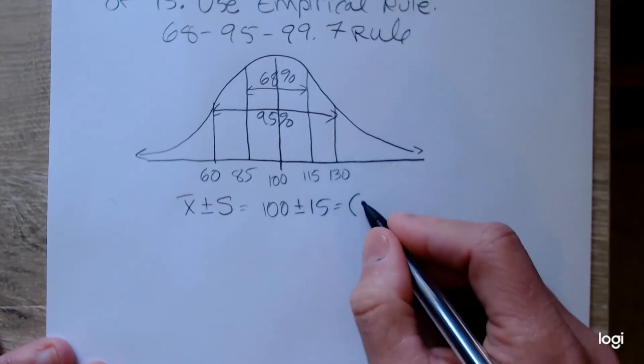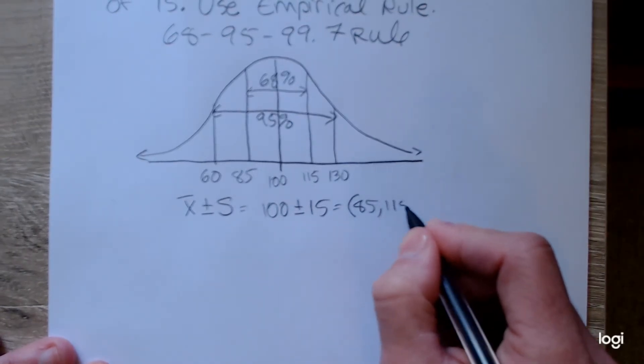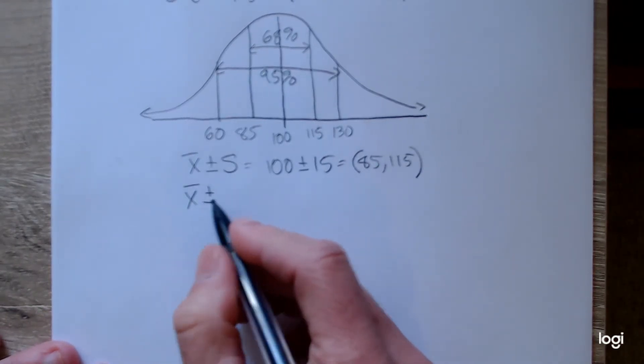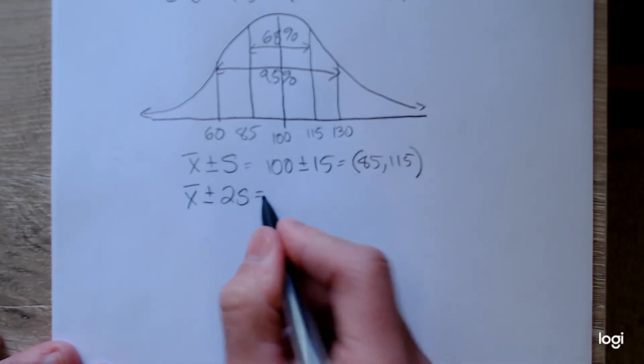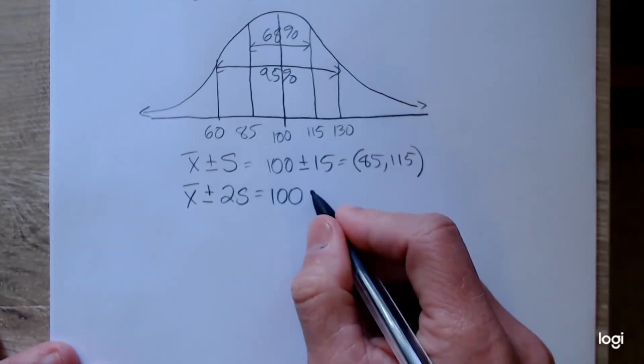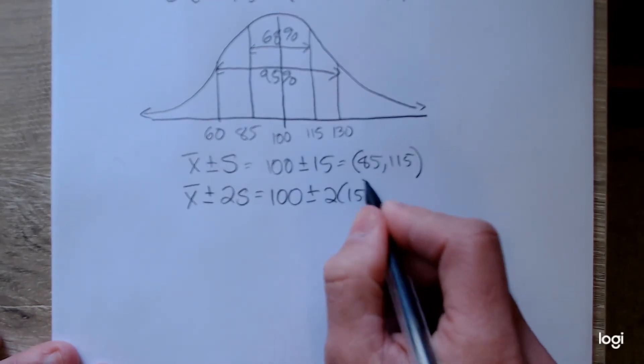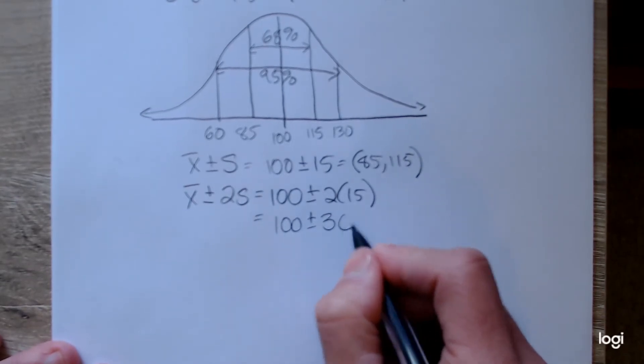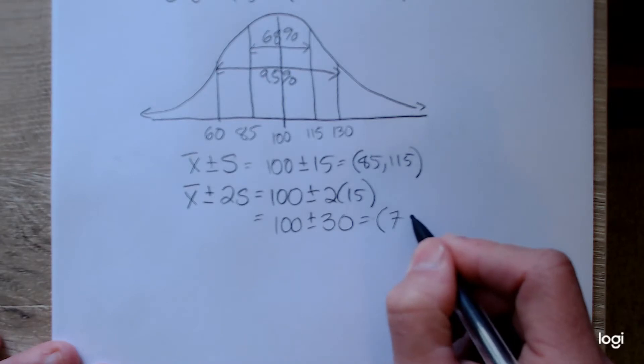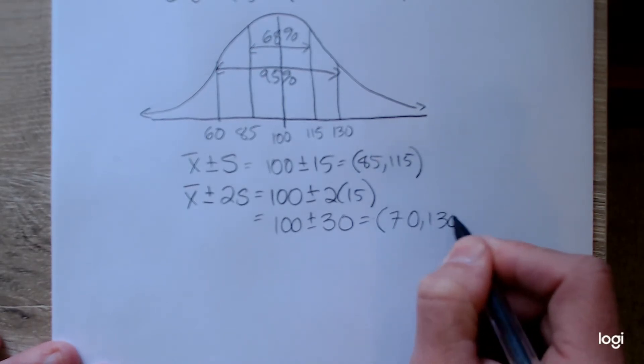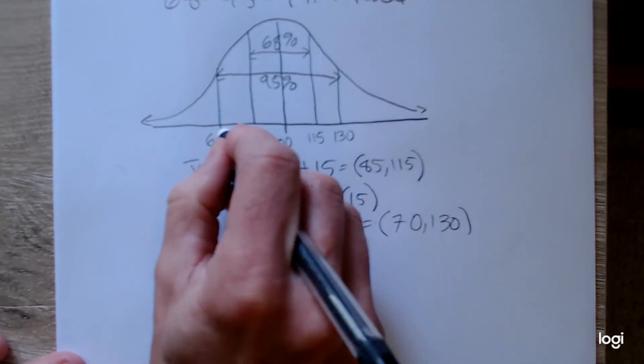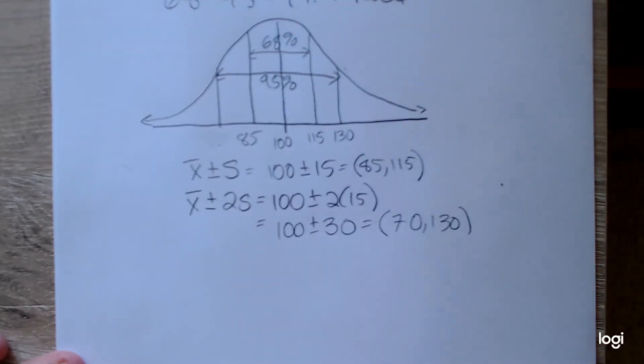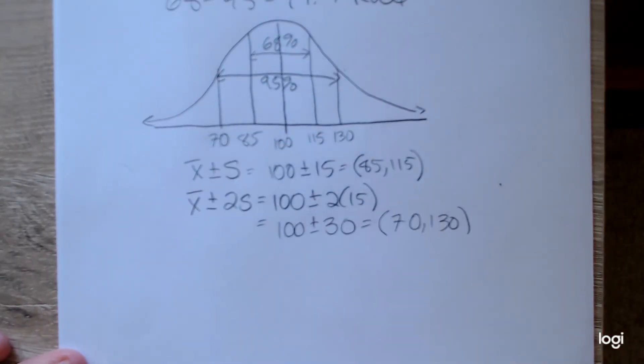So that gives me the interval from 85 up to 115 using interval notation. If I go out one more standard deviation or the mean plus or minus 2 standard deviations, that would translate to 100 plus or minus 2 times 15, or 100 plus or minus 30. So that goes down from 70 up to 130. So I did make a mistake up here. Again, I apologize. I am just very, very tired today. So my mistakes are common mistakes.